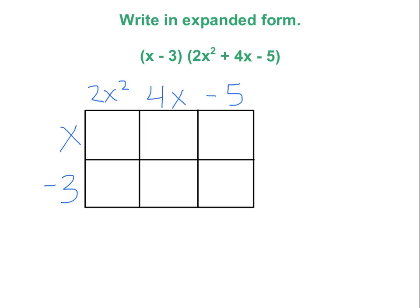and then I just multiply each term by the other. So 2x squared times x is 2x to the third. 4x times x is 4x squared. Negative 5 times x is negative 5x.